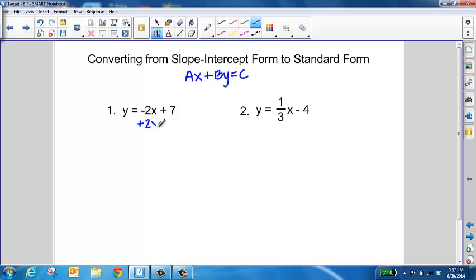We're going to do that by using inverse operations. Since it was negative 2x, we want to add 2x to both sides.